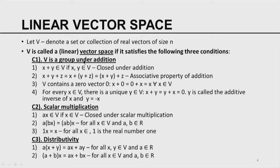The second condition involves scalar multiplication. If X belongs to V, then AX also belongs to V — any vector multiplied by a constant remains in the same set. If A and B are two scalars, multiplying X by B then by A equals multiplying A times B and then by X — an associative property with respect to scalar multiplication. Also, 1 times X equals X: multiplying any vector by the number 1 does not change it.